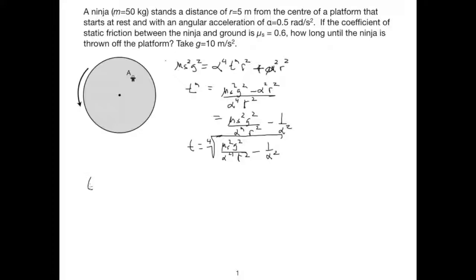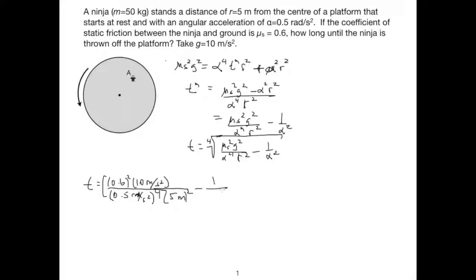Plugging in values: the static friction coefficient is 0.6 squared, g is 10 meters per second squared, divided by alpha = 0.5 radians per second squared raised to the fourth power, divided by distance r = 5 meters squared. From that we subtract 1 over alpha squared, which is 0.5 radians per second squared, quantity squared, close bracket, to the one-fourth power. Execute that in your calculator and you get 2.62 seconds.